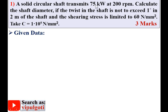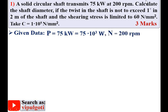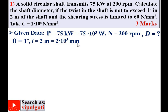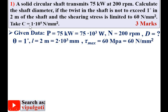Write down the given data. P = 75 kW = 75 × 10³ W. N = 200 rpm. D = ? (to find). Angle of twist θ = 1 degree. Length of shaft L = 2 m = 2 × 10³ mm. Shearing stress limited to 60 N/mm², so τ_max = 60 MPa = 60 N/mm². Modulus of rigidity C = 1 × 10⁵ N/mm².